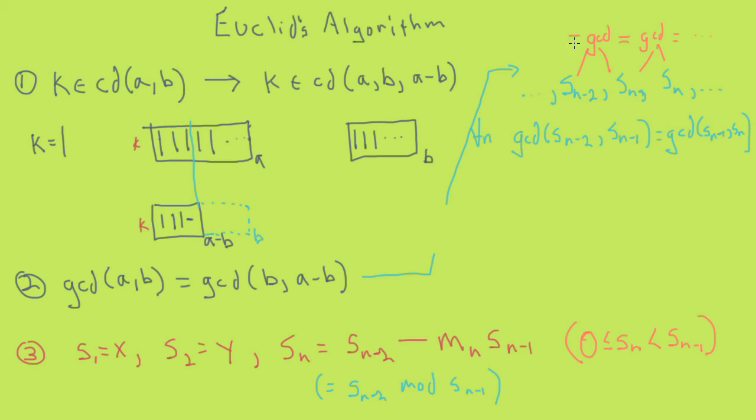So to finish the proof, we just need two more propositions. We need the proposition that the sequence will always end at some integer sk comma 0. This is the case because, as we said, we always choose m sub n such that sn is strictly decreasing and is always greater than or equal to 0. So a strictly decreasing integer sequence that is always greater than or equal to 0 must at some point become 0.